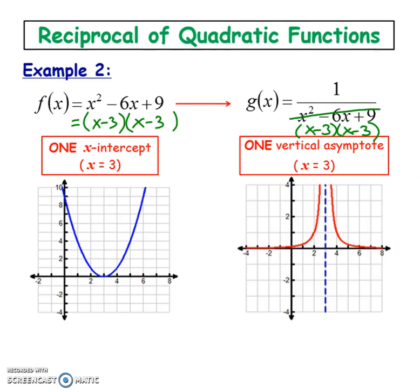So as you can guess, if you have a quadratic that has one root or one x-intercept, so notice that you get the same number when you factor, its x-intercept is 3, which means when you do the reciprocal of that quadratic, you're going to have only one vertical asymptote at 3.